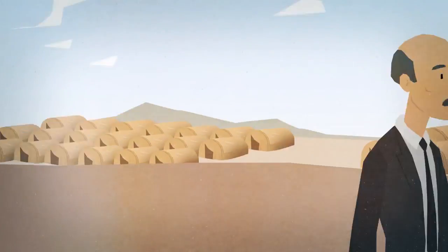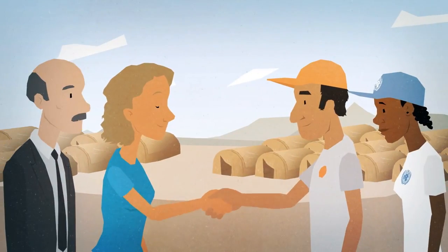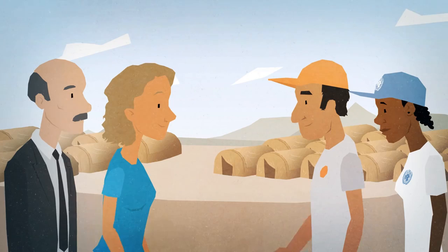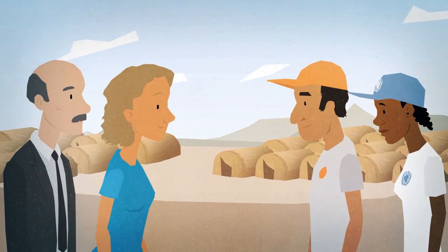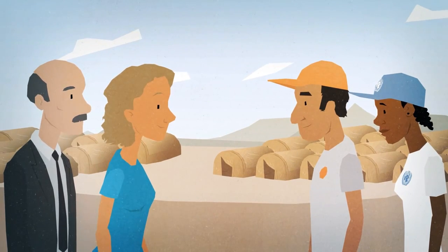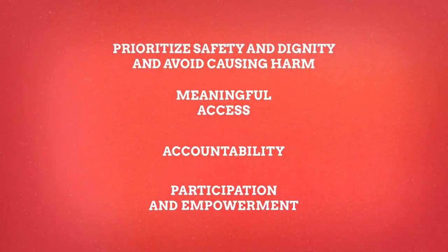All humanitarian actors have a responsibility to mainstream protection in their programs. The concept of protection mainstreaming is guided by four interconnected key elements. These are: